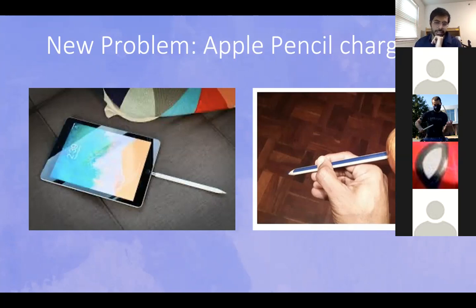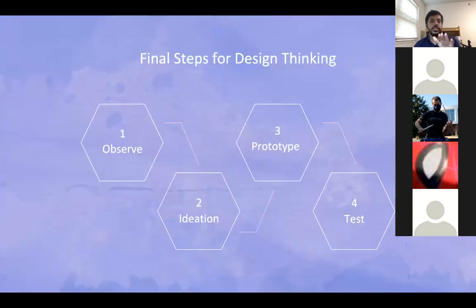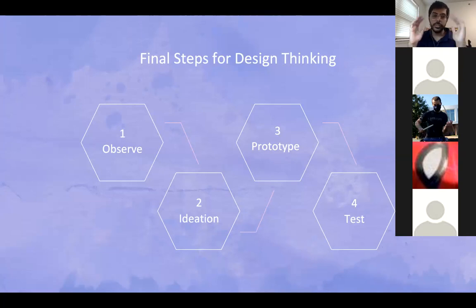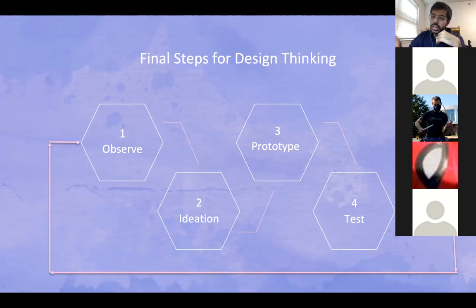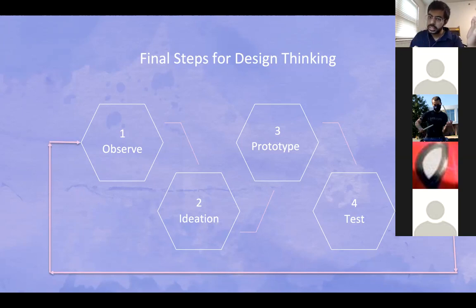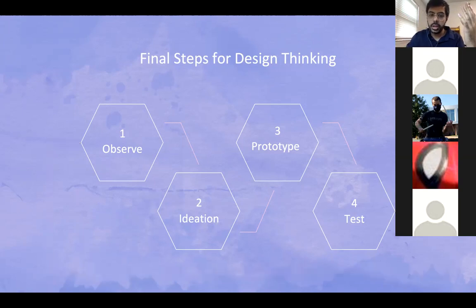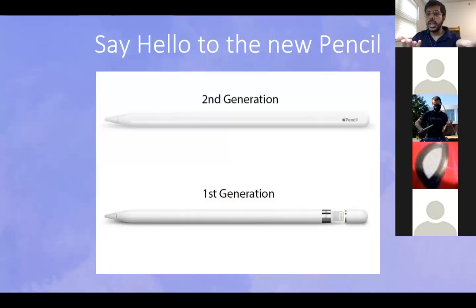So you might say design thinking failed us. Not really. The problem is I didn't teach you design thinking properly — there was still one critical aspect I didn't teach you. You get a problem, you observe, ideate, prototype, test — great. But what's that one thing left? The one thing left is to repeat it all over again — essentially make it an iteration. Not all your products work the first time. What if my test doesn't work? What if my prototype fails? I need to go back to the drawing board and again observe, ideate, prototype, test — and do this cycle on and on until I solve my problem. In Apple's case, they saw this problem, went back to the drawing board, did the iteration, and came up with the Apple Pencil second generation.